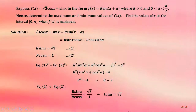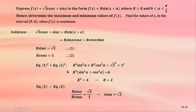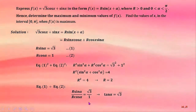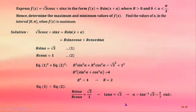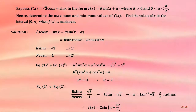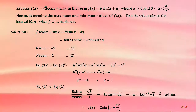Fourth step: solve for alpha — to get tangent, we divide equation one by equation two. Alpha equals 2π/3 radians. Finally, express f(x) as a single term: 2·sine(x + π/3). Now we can determine the maximum and minimum values of f(x) since it is expressed as a single term.